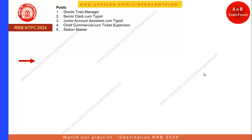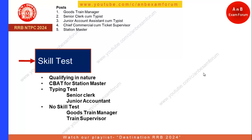Those who have qualified the merit list will go for the skill test. An important point: the skill test is qualifying in nature — there is no particular score threshold beyond qualifying. Different skill tests are required for different posts: computer-based aptitude test, and typing test for Senior Clerk and Accountants since they need to type fast. Importantly, there is no skill test for Goods Train Manager and Train Supervisor — if you applied for these two posts, there will be no skill test.